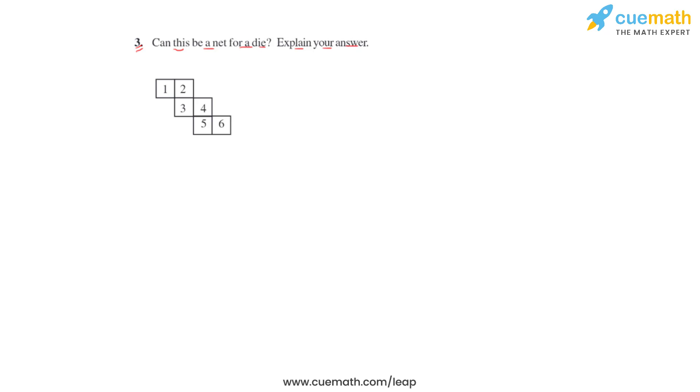To answer this question, let us take this net without the numbers. If we are going to form a cube-shaped die from this net, let us take the reference of a cube-shaped room where we have the four walls, the floor, and the ceiling forming the six faces of the die.